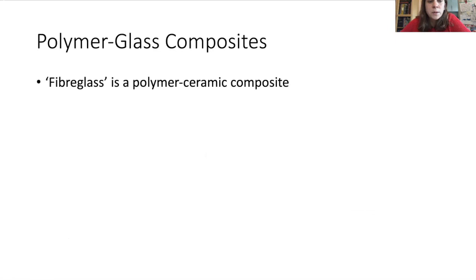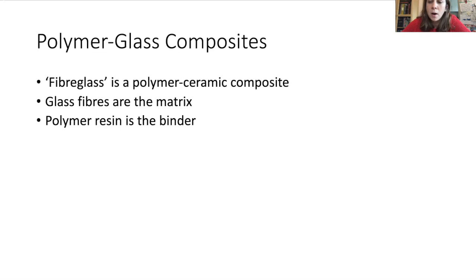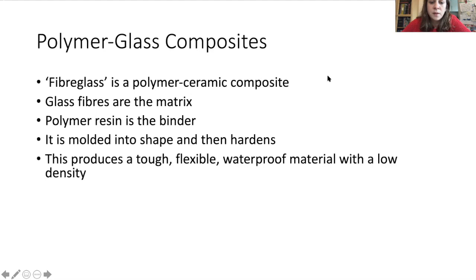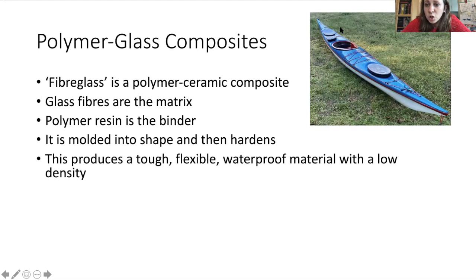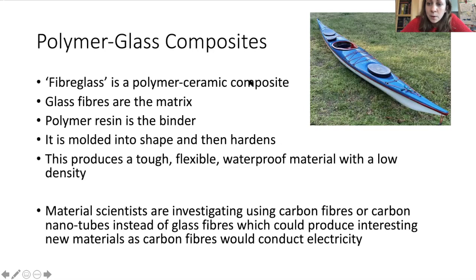Another example, probably one you're more familiar with, is polymer-glass composites. Fiberglass is an example where we've got polymers and glass joined together. You have glass fibers as your matrix and then surround that with a binder of polymer resin. You can mold it into shape and it hardens, producing something that's tough, flexible, waterproof and has a low density - making it useful for things like kayaks and boats. An area of development is looking at carbon fibers or carbon nanotubes put in instead of glass fibers, which would create a structure similar to fiberglass, but because those carbon nanotubes can conduct electricity, that would give you a whole different set of applications.